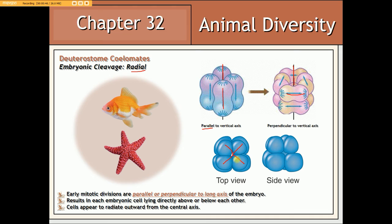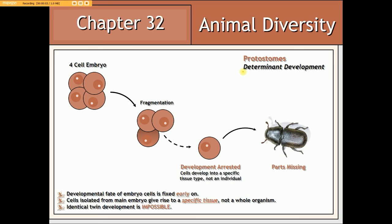The timing at which stem cells differentiate in a protostome coelomate embryo is often regarded as being determinate, meaning differentiation occurs very early — as early as the four-cell stage. As a result, the loss of any one cell from the embryo, even at this early stage, will not lead to the development of a whole individual but rather a specific tissue type. As a result of this early differentiation, identical twin development among protostome coelomates is not usually observed.